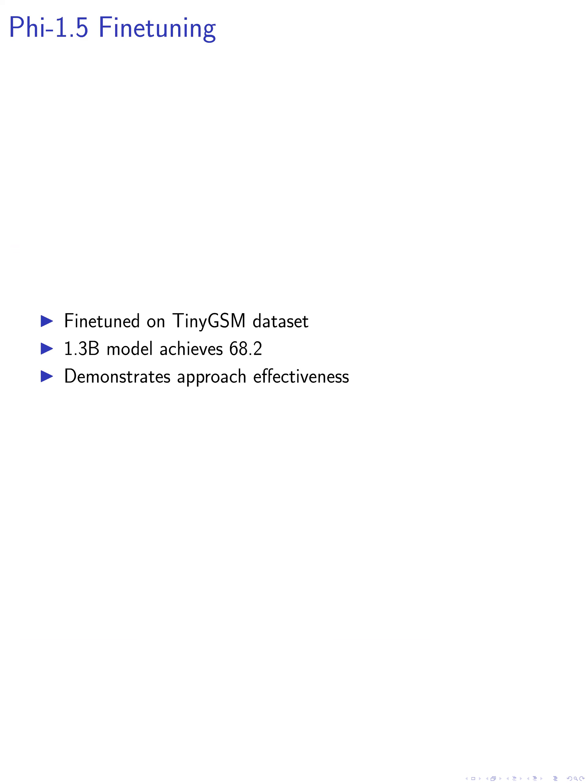Next, we fine-tune the PHI-1.5 models, which include the 125M, 350M, and 1.3B versions, on the tiny GSM dataset. Notably, the 1.3B model achieves an accuracy of 68.2% on the GSM-8K dataset after fine-tuning, demonstrating the effectiveness of our approach.